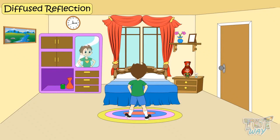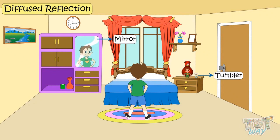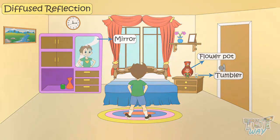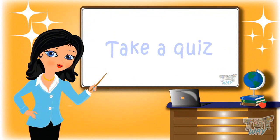Only in very smooth surfaces — that is, the tumbler, the mirror, and the shiny pot. So kids, today we learned about reflection and its types: diffuse reflection and specular reflection. Now go ahead and take a quiz to learn more.